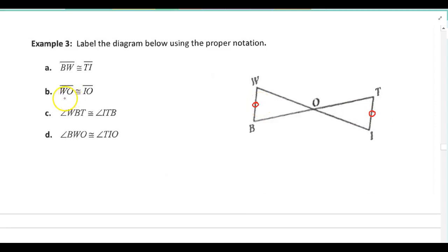And then I have WO congruent to IO. So let's use another tick mark. So here's WO, and here's IO. Use whatever tick marks you feel like.